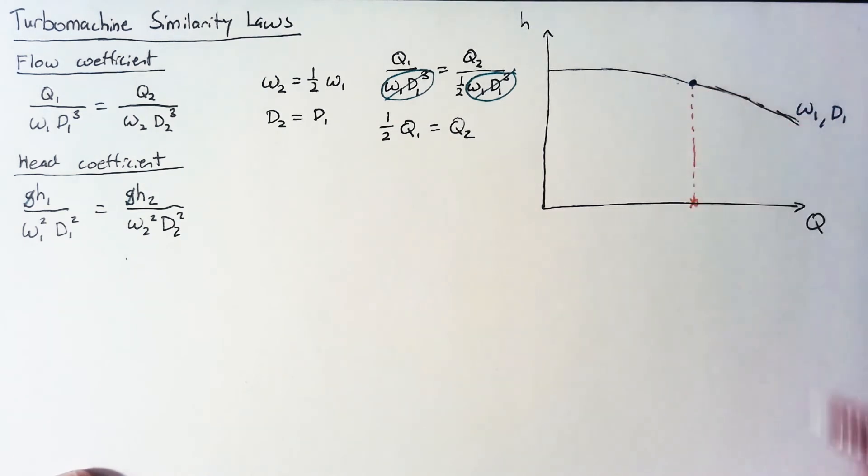So if we drop the line down to find out where our current Q value was, our new Q would be half that.